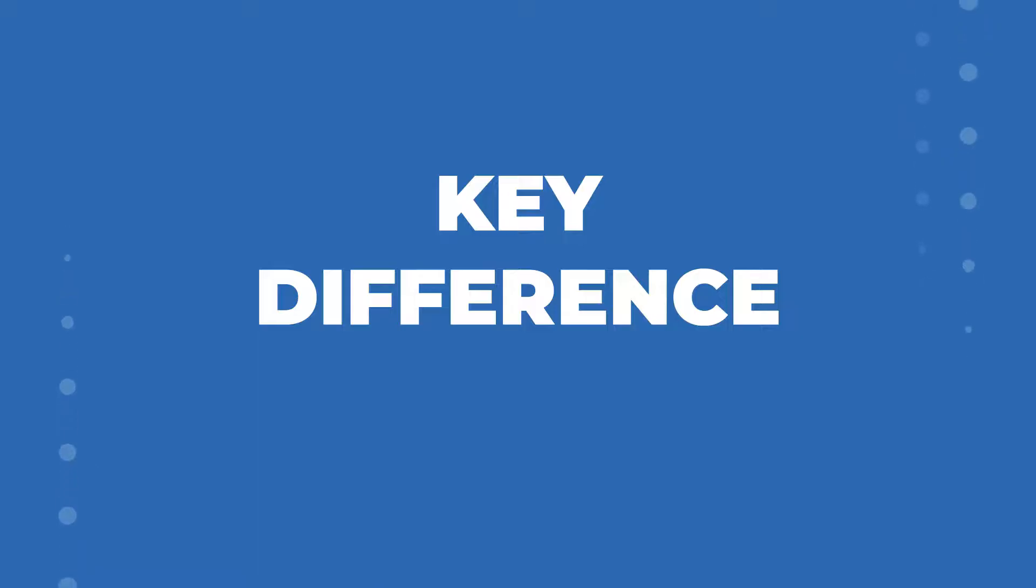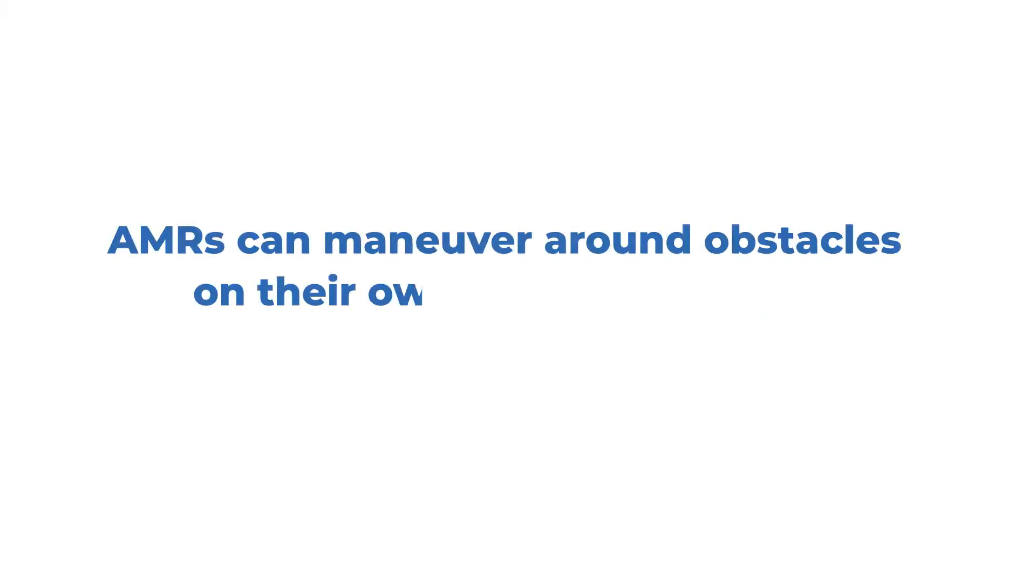The key difference between AMR versus AGV is AMRs can maneuver around obstacles on their own, while AGVs cannot.